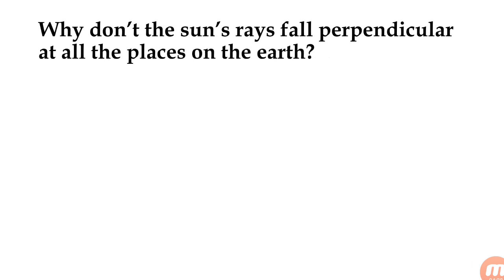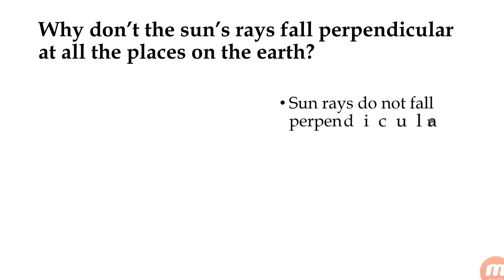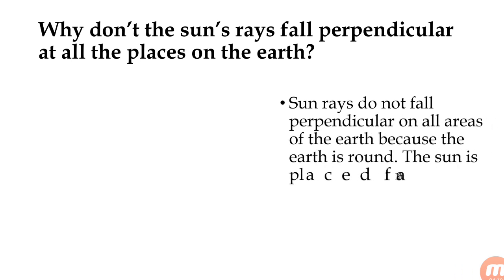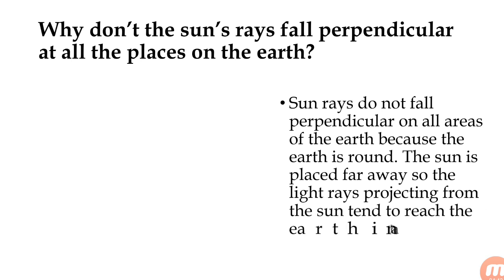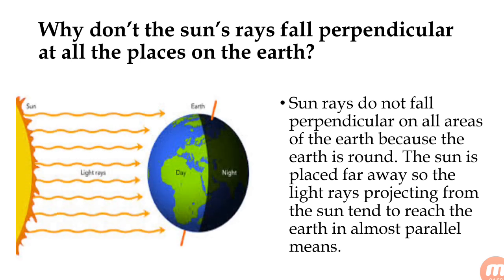Why don't the sun rays fall perpendicularly at all places of the earth? The sun rays do not fall perpendicularly at all areas of the earth because the earth is round. The sun is placed far away so that light rays projected from the sun tend to reach the earth in almost parallel lines. You can see the sun rays coming in parallel lines hitting the round earth, and because of that the sun rays are not coming perpendicularly to all areas.